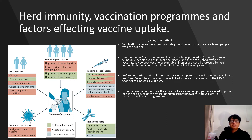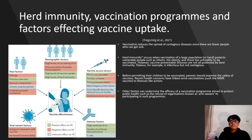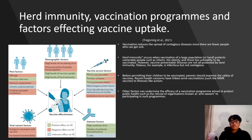Vaccination reduces the spread of contagious diseases since there are fewer people who can get sick. For example, if a person with measles is surrounded by people who have been vaccinated, the disease cannot easily spread and disappears rapidly. Herd immunity occurs when vaccination of a large population protects vulnerable people such as infants, the elderly, and those too unhealthy to be vaccinated. However, not all vaccine-preventable illnesses are protected by herd immunity. Tetanus, for example, is infectious but not contagious — it is spread by germs in the environment, not by infected humans, so tetanus vaccination does not protect others from developing the disease.